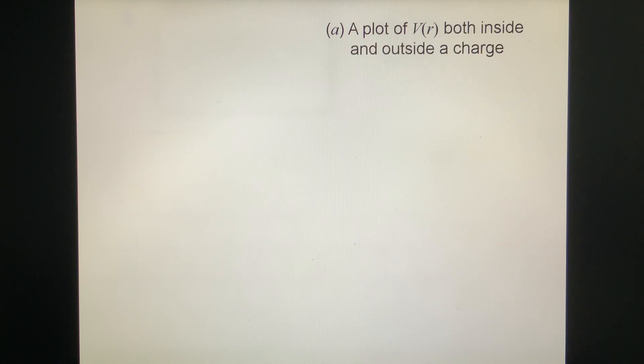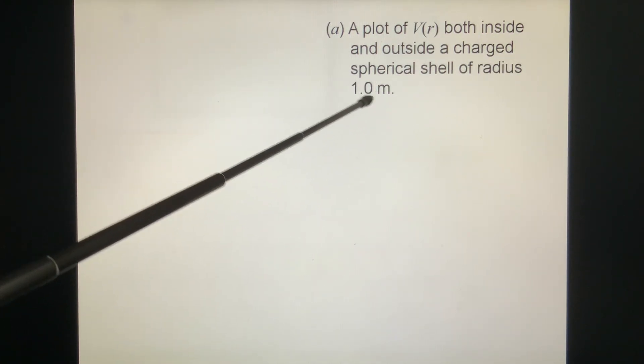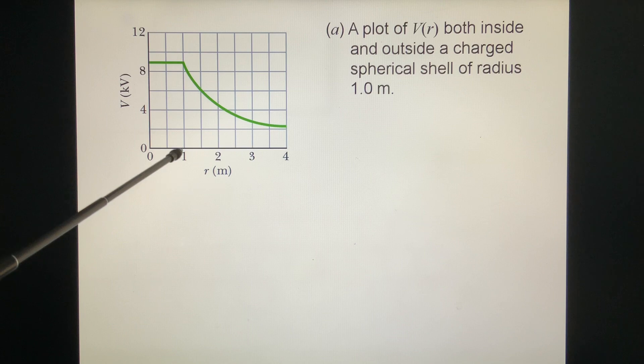A plot of V, both inside and outside of a charged sphere, spherical shell of radius 1.0 meter. This is the one point, this is the border. Inside, V is constant, not necessarily zero.